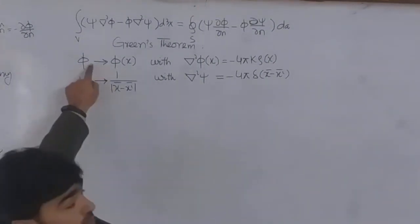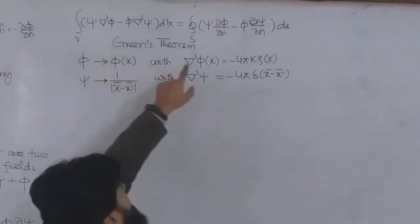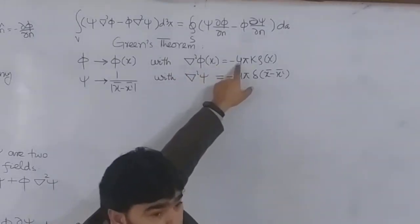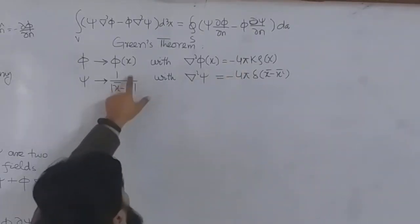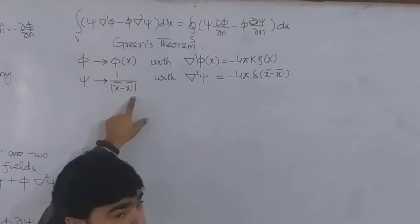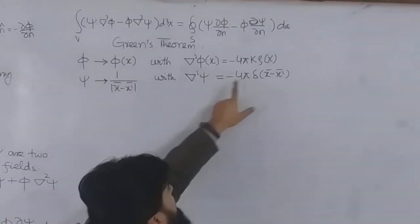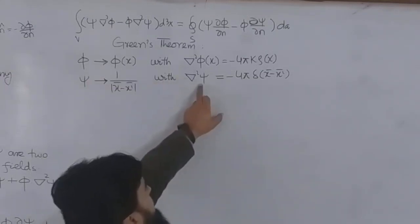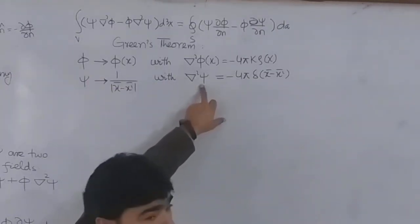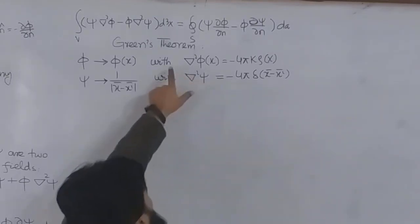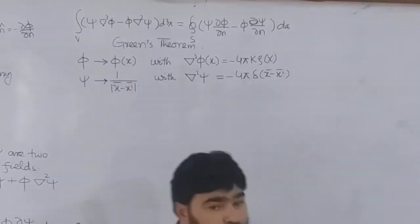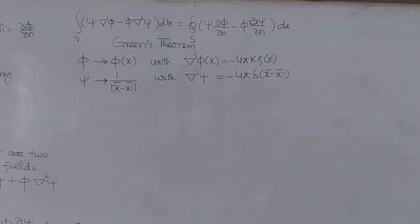We have derived φ — this is Poisson's equation — and we have also derived ψ and proved that ψ is actually the solution of Laplace's equation. So one function I wrote for φ and another for ψ. These two we have done earlier; now we put these values in.